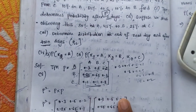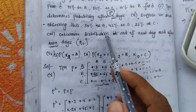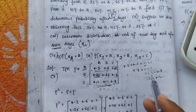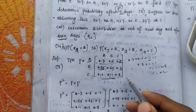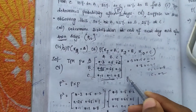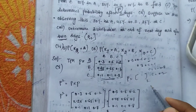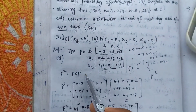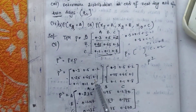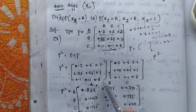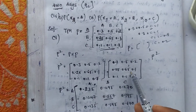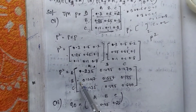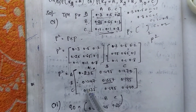We get the transition probability matrix P. He is asking for the probability after 2 days, which means P². We know P² = P × P. Taking one P as matrix A and one P as matrix B, and calculating matrix A into matrix B using the Casio calculator, we get the value of P².